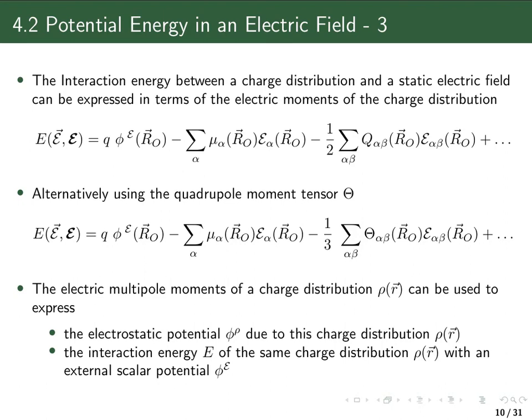So you can see that these electric moments — dipole moment, quadrupole moment, and so forth — can be used in two ways: they appear in the expansion of the electrostatic potential coming from our charge distribution, and they also appear in the expansion of the interaction energy of our charge distribution with an external electrostatic potential coming from an external field.